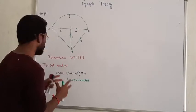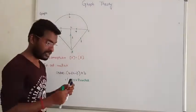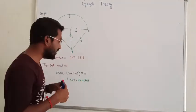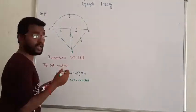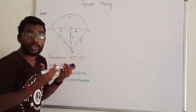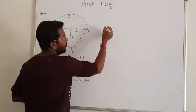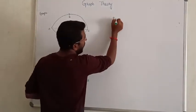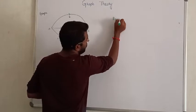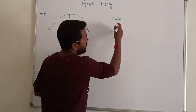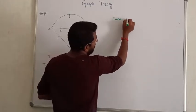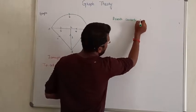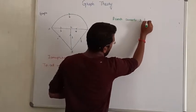Let us see how to solve the tie set matrix. The tie set matrix deals with branch currents and loop currents. It will bring the relation between branch currents and loop currents.